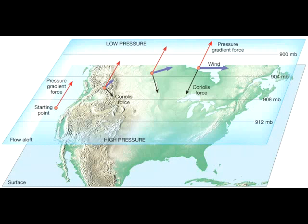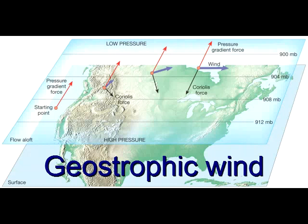Pressure gradient and Coriolis force are in a balance. The combination of pressure gradient and Coriolis force causes the wind to flow parallel to the isobars. This occurs in reality in the upper troposphere. Winds that flow parallel to the isobars are called geostrophic winds.